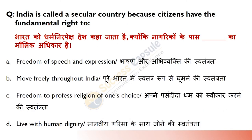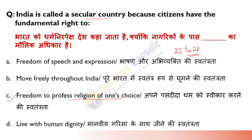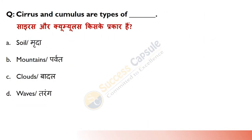India ko ek secular country kaha jaata hai kyunki citizens have the fundamental right to freedom to profess religion of one's choice. Answer is C. Articles 25 to 28 of Indian constitution freedom of religion dete hain, isliye India ek secular country hai.